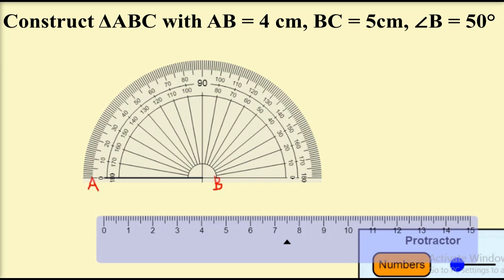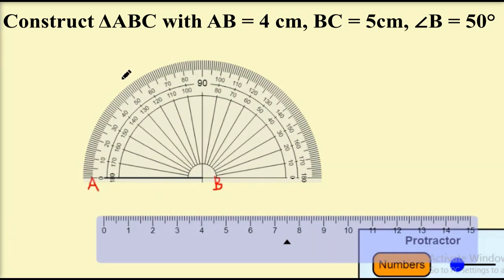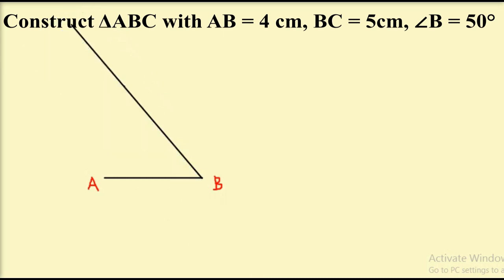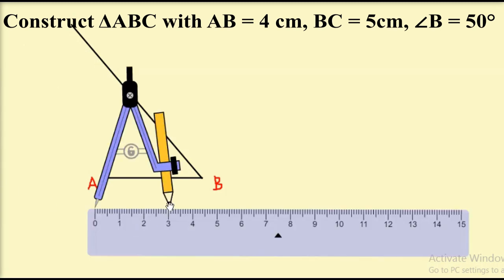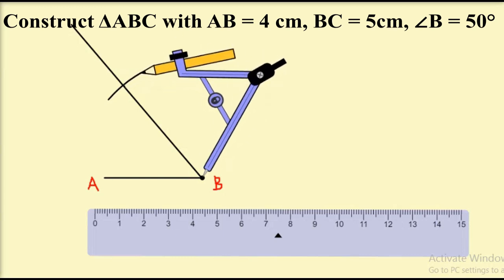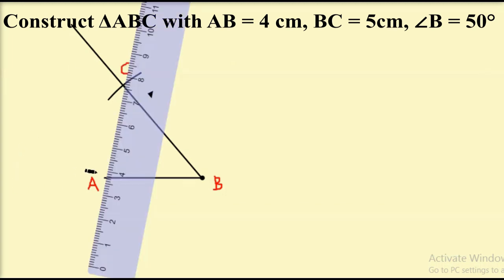Since angle B is equal to 50 degrees, place the protractor exactly at point B so the horizontal line coincides with B, and mark 50 degrees. Draw a ray through point B making an angle of 50 degrees. With B as center and radius 5 cm, draw an arc intersecting the ray at point C. Join points C and A. Triangle ABC is the required triangle.